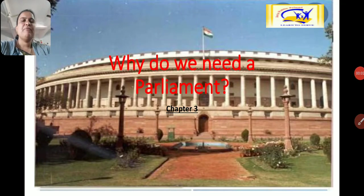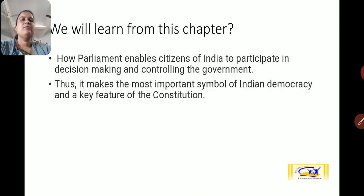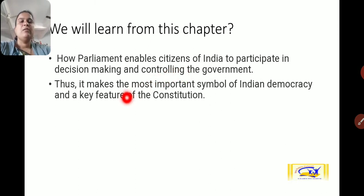Welcome students. In today's session we will be studying Political Science Chapter 3, and the name of the chapter is 'Why Do We Need a Parliament.' We are going to learn how parliament enables citizens of India to participate in decision making and controlling the government — a very important aspect, making it the most important symbol of Indian democracy and a key feature of the Indian constitution.